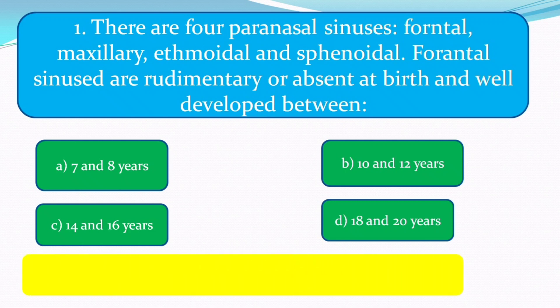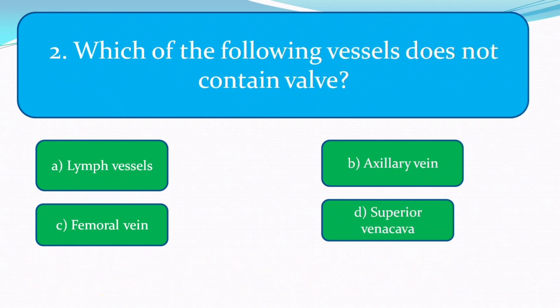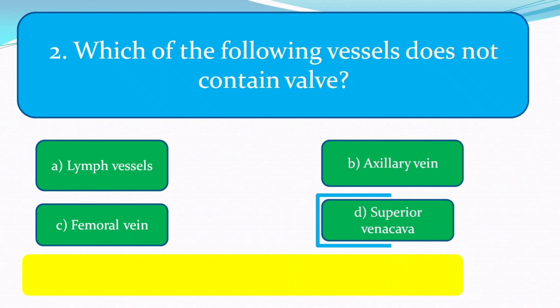The next question is on your screen: which of the following vessels does not contain pulp? Guess the correct answer — how many do you know? Evaluate yourself. The correct answer is the superior vena cava.